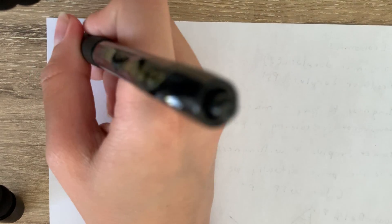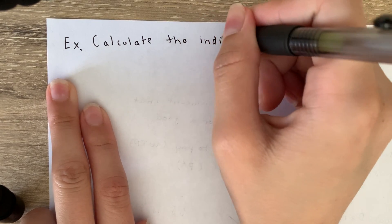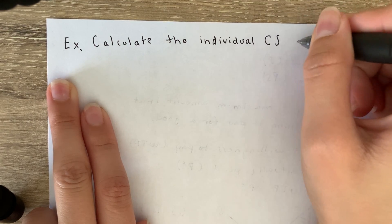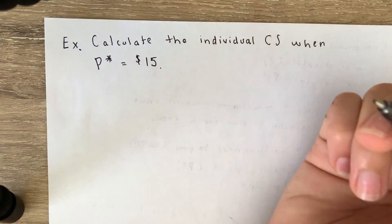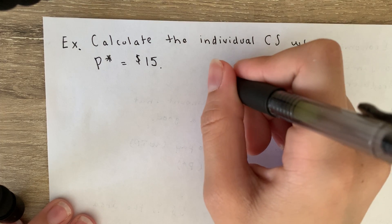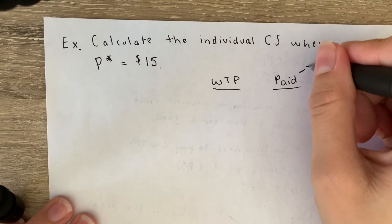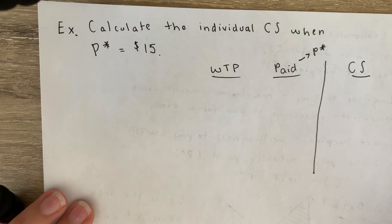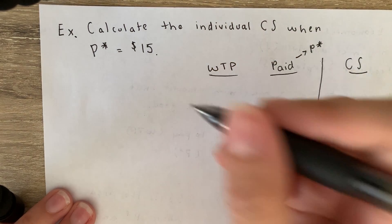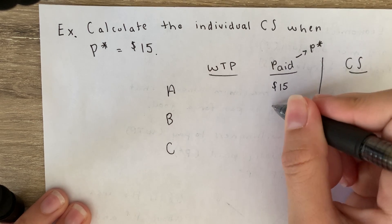This example is for consumer surplus. We want to calculate the individual consumer surplus when P star equals $15. Let's set up a chart with columns for willingness to pay, the amount actually paid (P star), and consumer surplus. We'll look at individuals A, B, and C, who all paid $15 for this good.